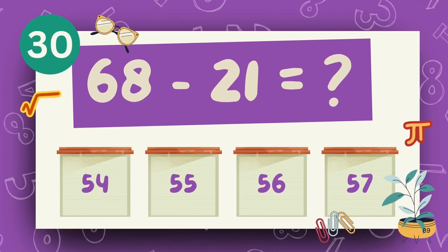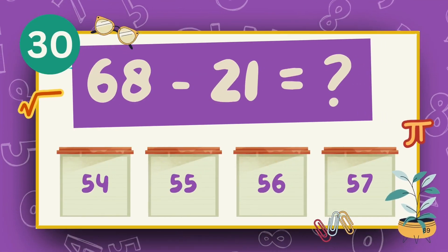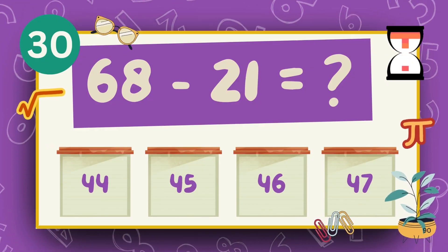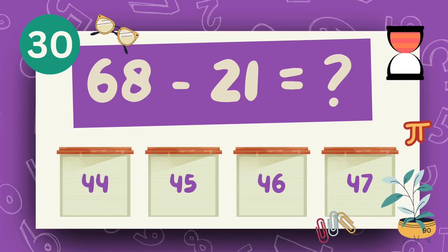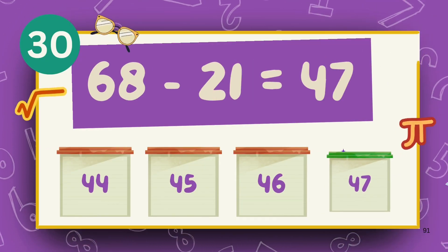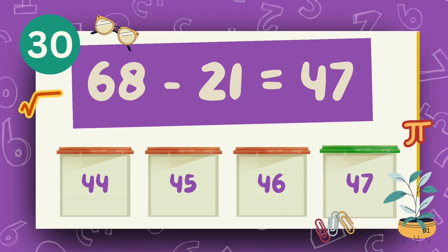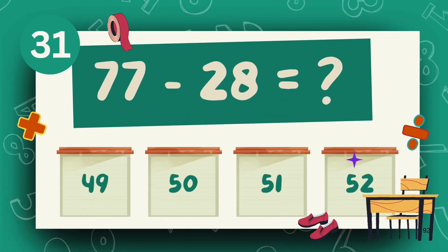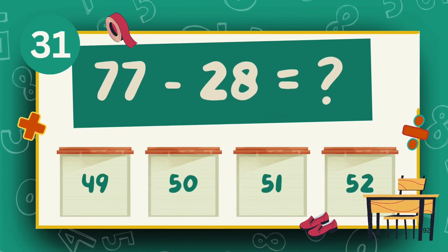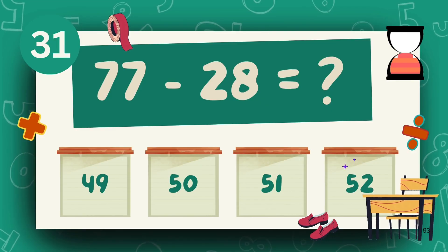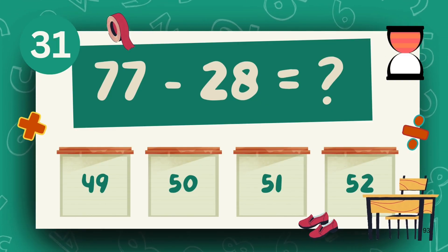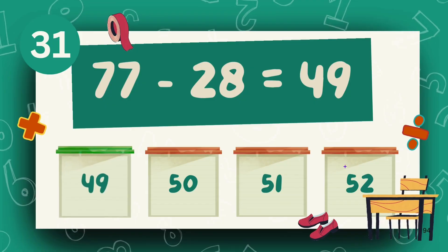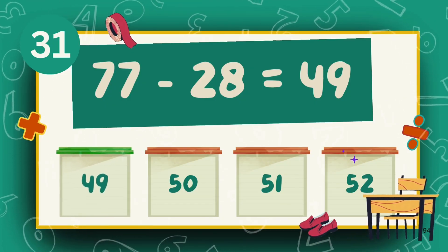What is sixty-eight minus twenty-one? The answer is forty-seven. What is seventy-seven minus twenty-eight? The answer is forty-nine.